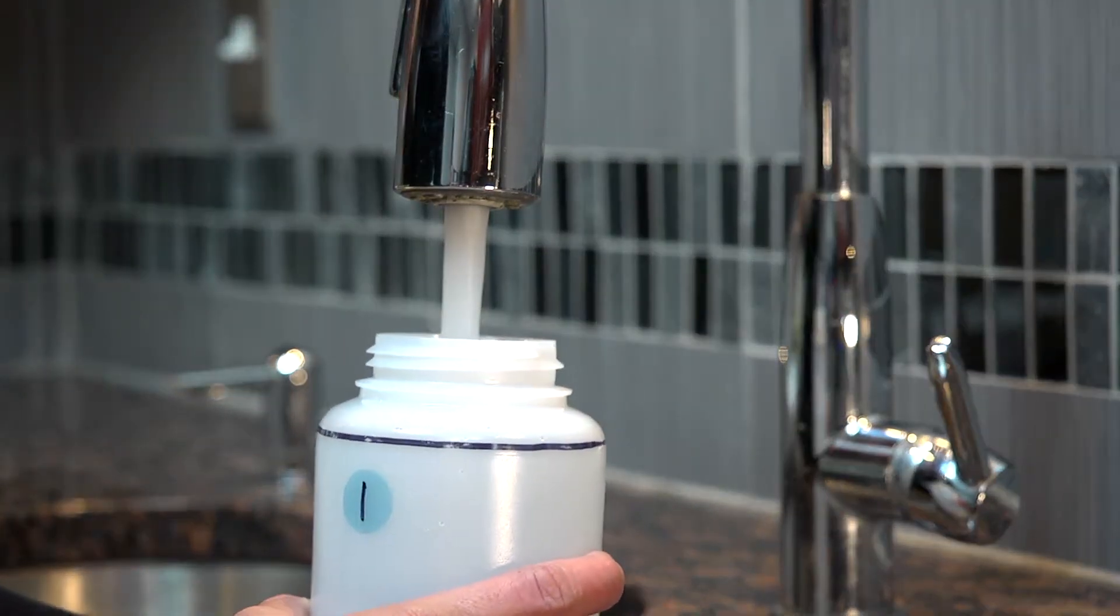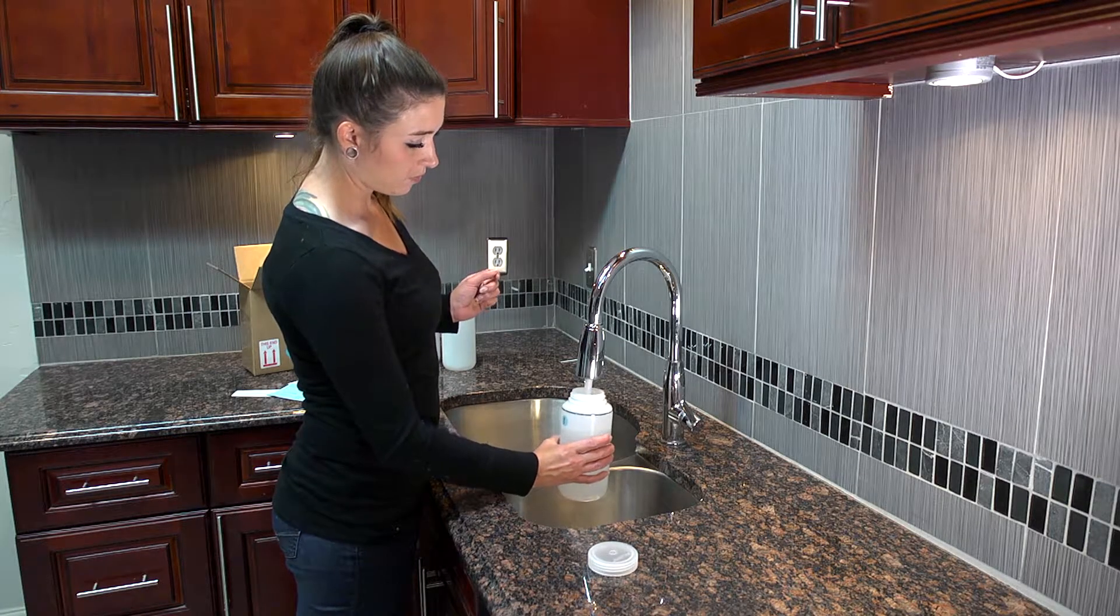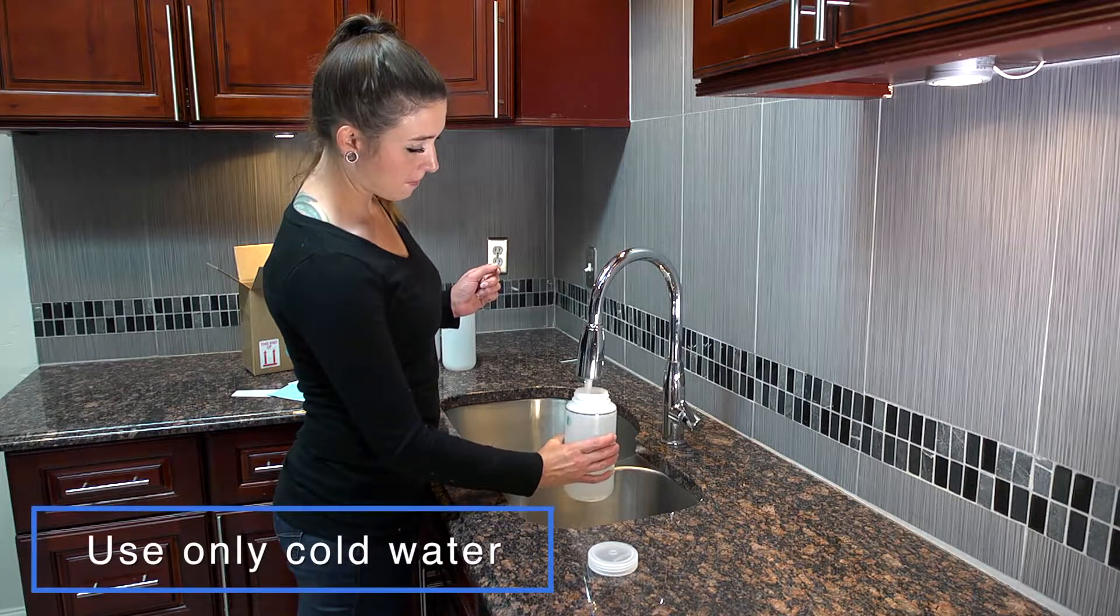Place bottle number one under the faucet. Turn on the cold water and fill the bottle to the black line. Make sure to use only cold water.